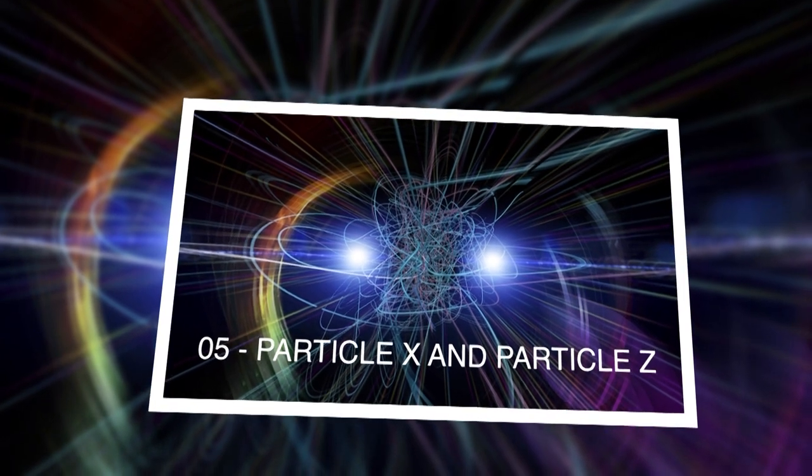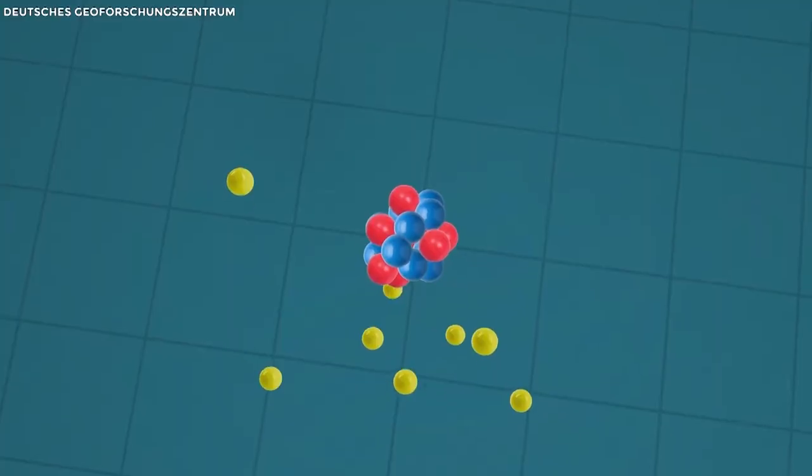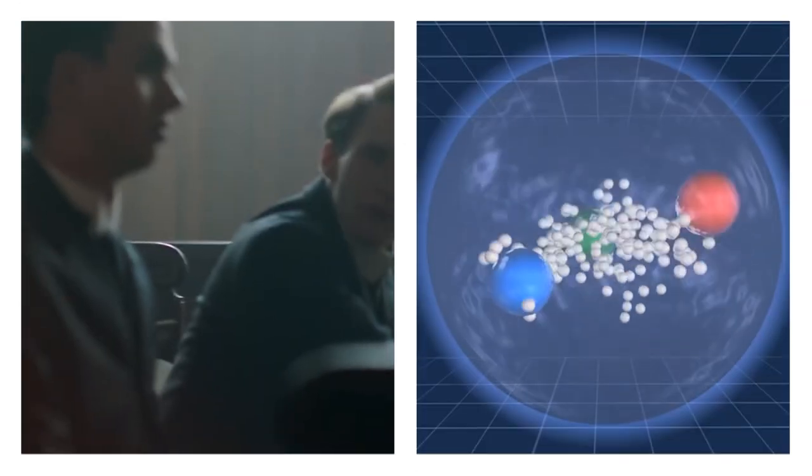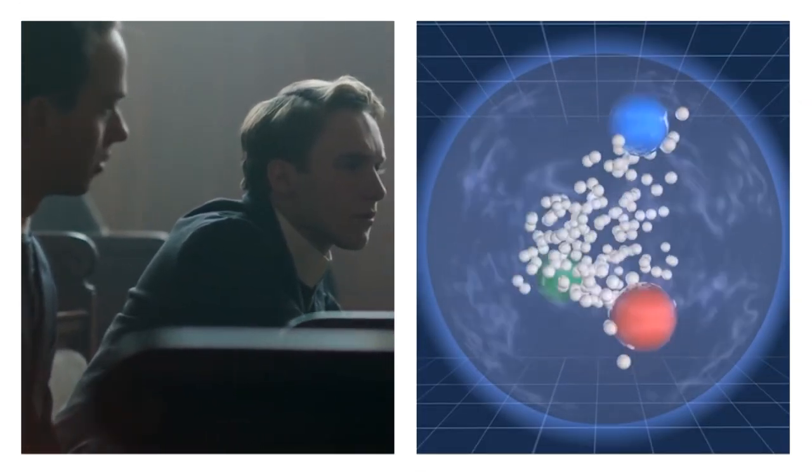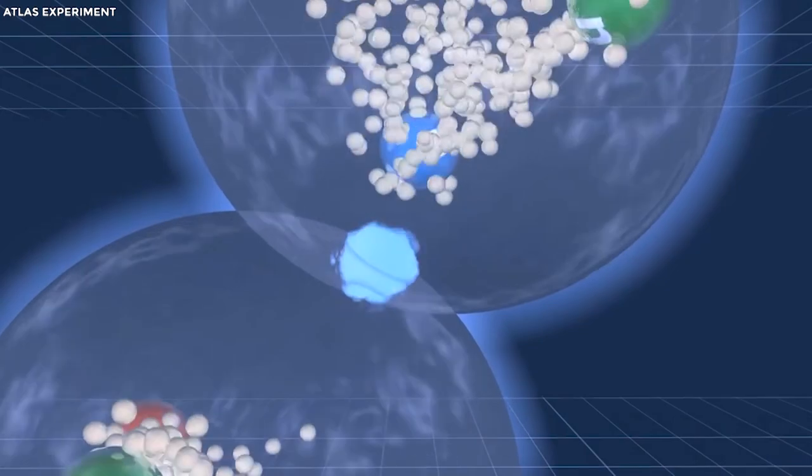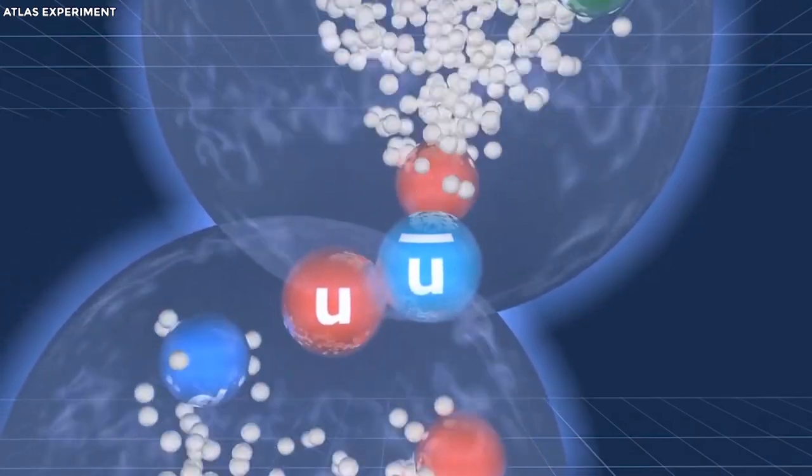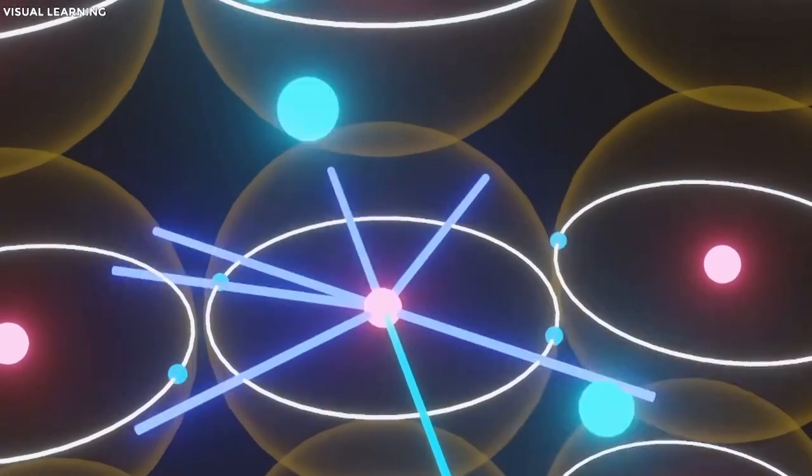Particle X and Particle Z. In 1964, two intrepid researchers grappled with the enigma of hadrons. These tiny particles, governed by the potent strong force, posed a puzzling structure challenge. In the quest for understanding, Murray Gell-Mann unveiled the name quarks, assigning them three distinct characters: up, down, and strange.